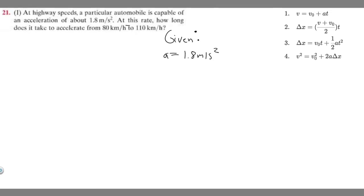We're told that the acceleration is 1.8 meters per second squared. At this rate, how long does it take to accelerate from 80 kilometers per hour to 110 kilometers per hour? Our initial velocity, V sub zero, is 80 kilometers per hour. When they say from this to this, it means from our initial velocity to our final velocity, so our final velocity is 110 kilometers per hour.